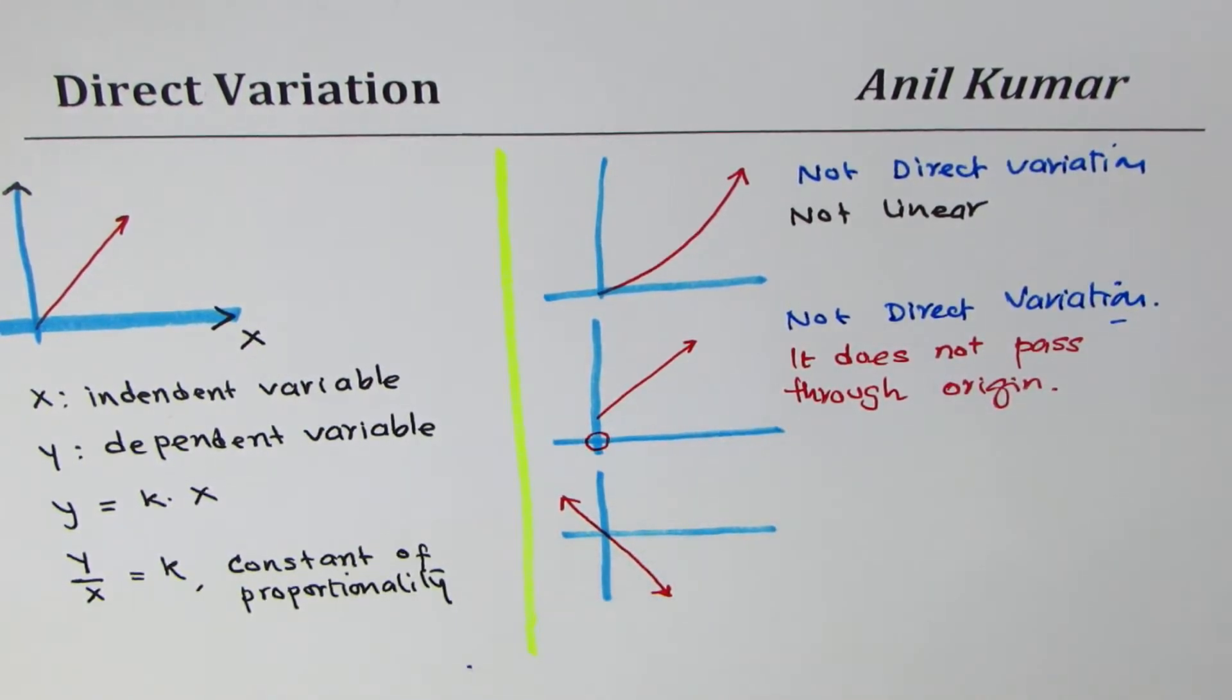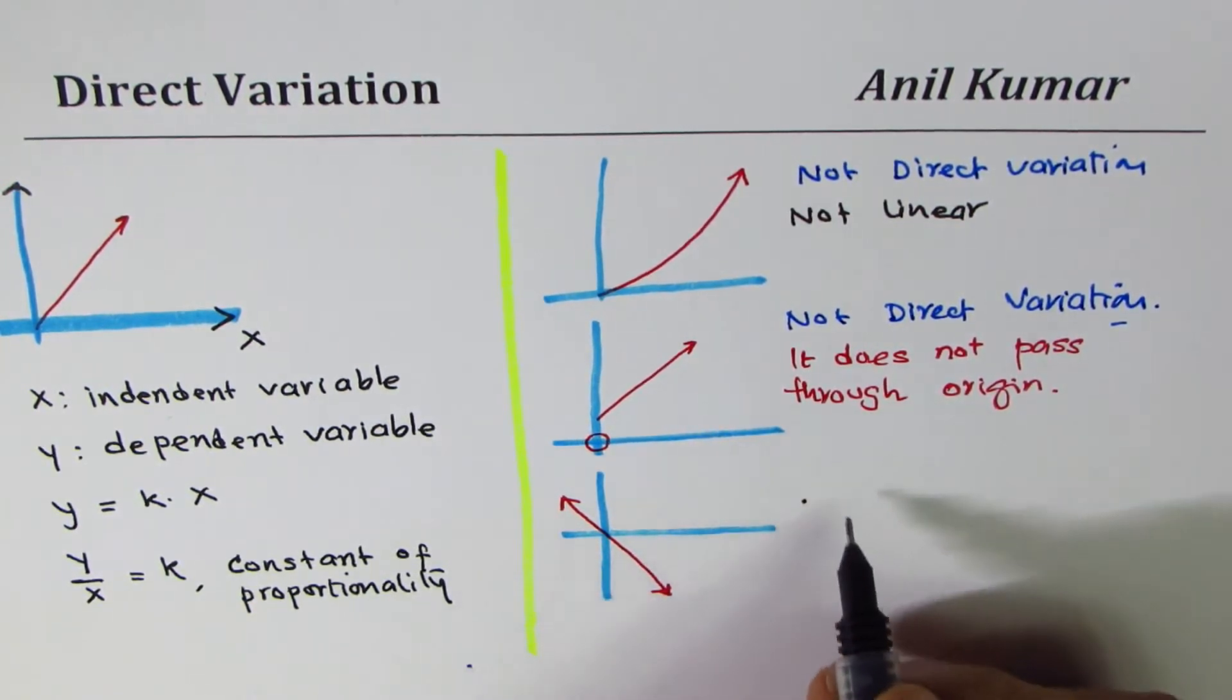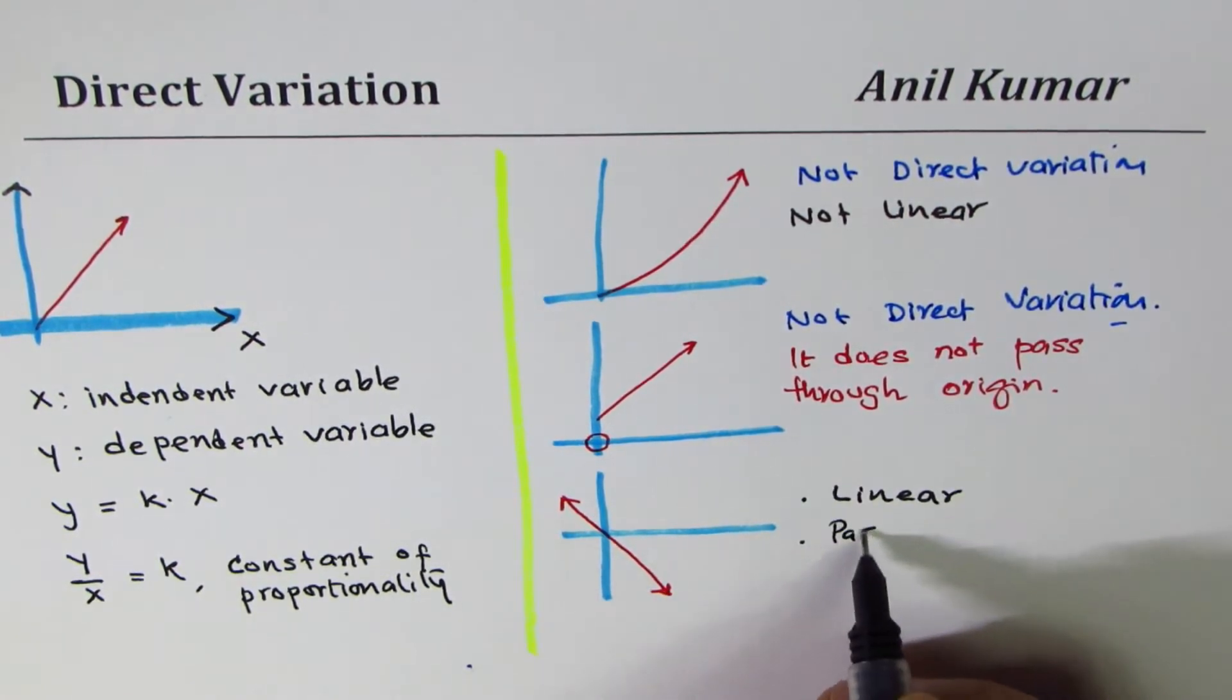How about the last one? The last one which we see has two important characteristics: it is linear and second it passes through origin.